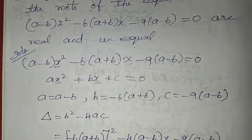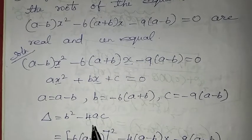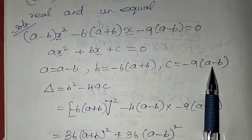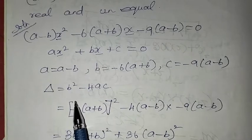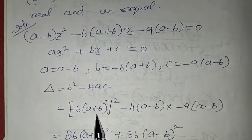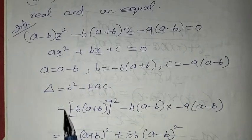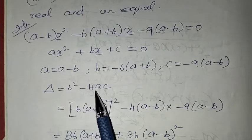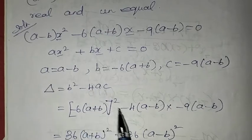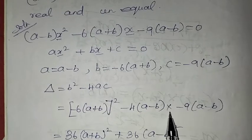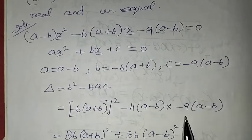Now, delta is equal to b square minus 4ac. We will substitute the formula. So, b square is minus 6 into (a plus b), the whole square. Then minus 4 into a, which is (a minus b), into c, which is minus 9 into (a minus b).